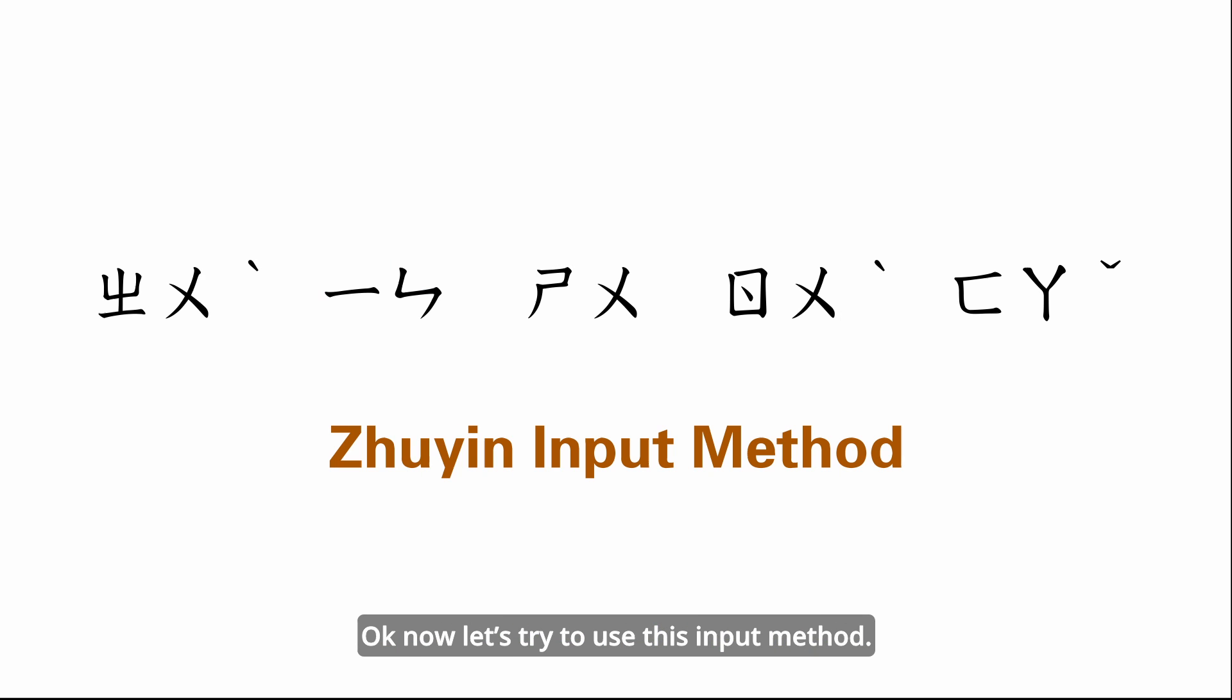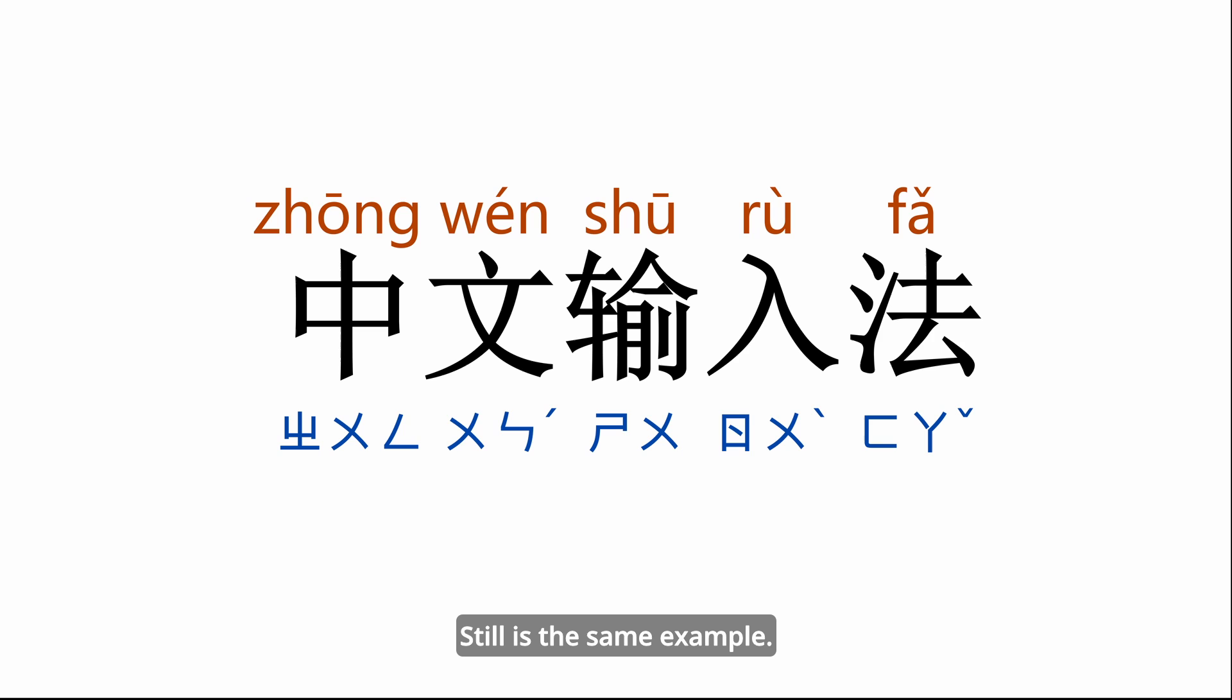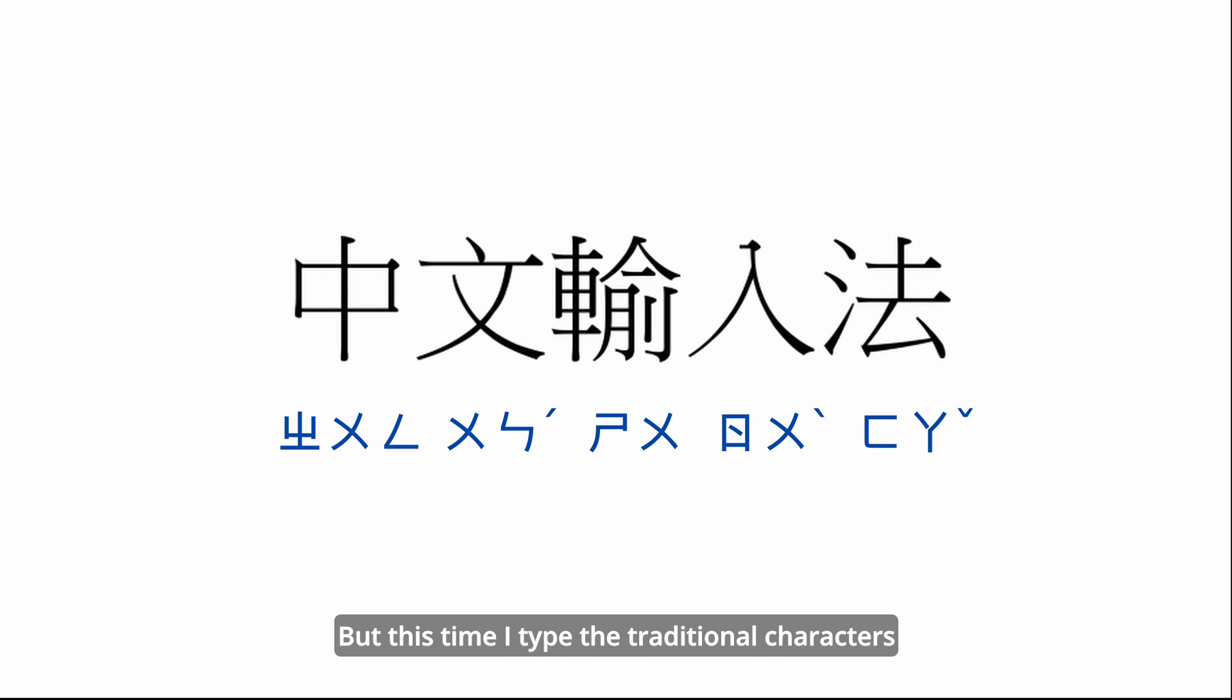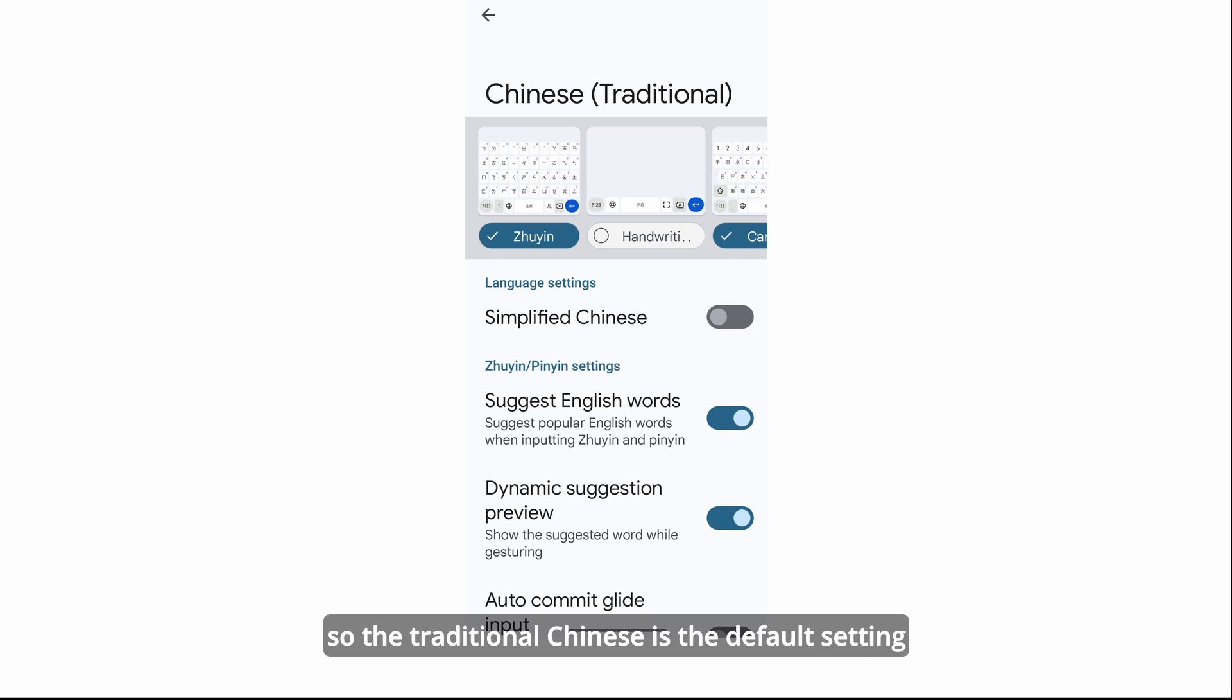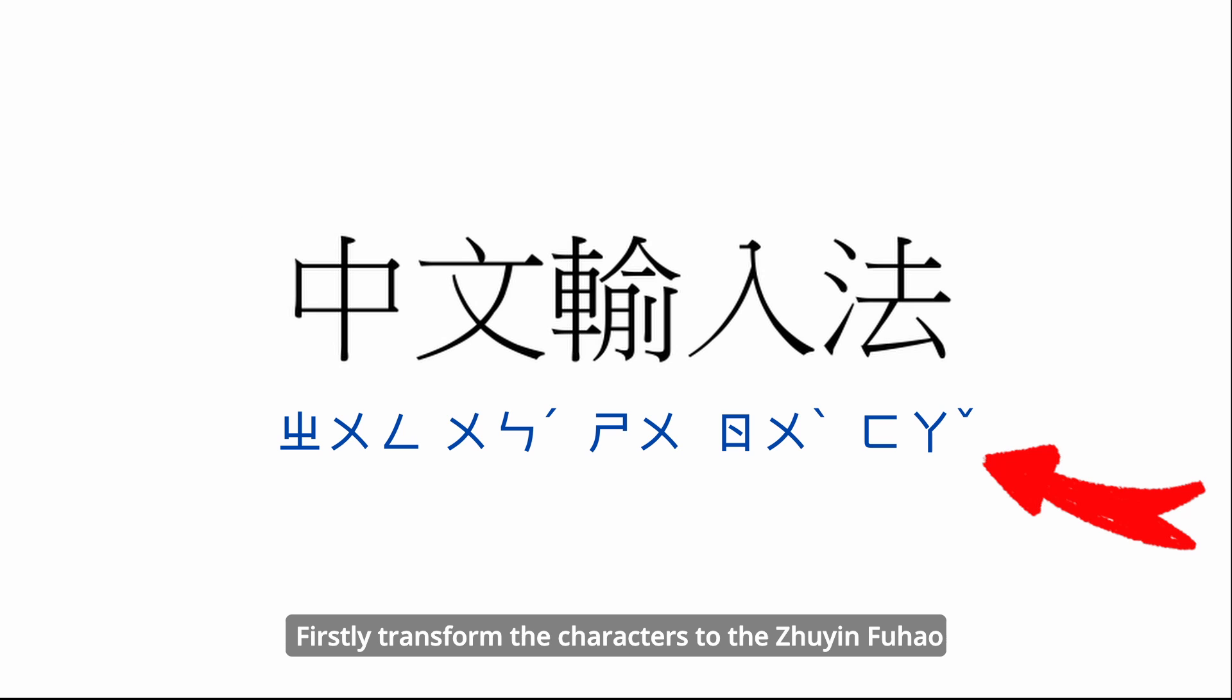Okay, now let's try to use this input method. Still the same example, but this time I type traditional characters. After all, this input method is from Taiwan, so traditional Chinese is the default setting. First, transform the characters to the Zhuyin fuhao in our mind just like this. The same logic as the pinyin input method, right?